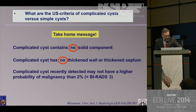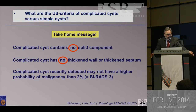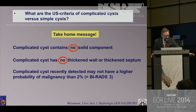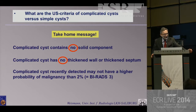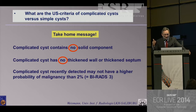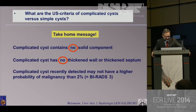The take-home message for complicated cysts: a complicated cyst contains no solid components and has no thick wall or thick septum. Complicated cysts recently detected may not have a higher probability of malignancy than 2%, so we can put them in BI-RADS 3. Otherwise, it has to be BI-RADS 4 if something suggests the probability of malignancy could be higher.